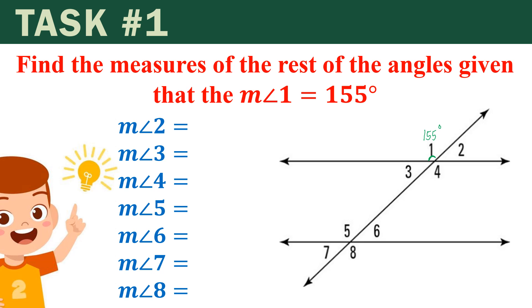I'm going to apply the vertical angle first. Angle 1 and angle 4 are considered vertical angles. Hence, we can say that angle 4 is also 155 degrees.